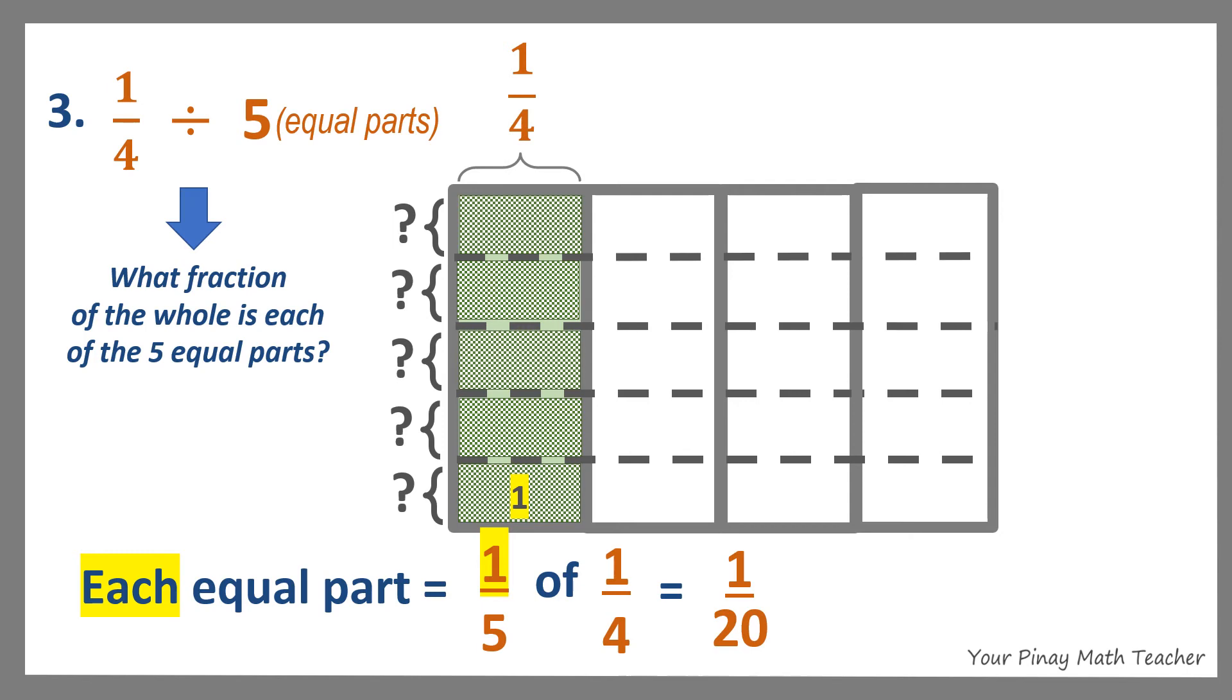Or, you multiply or you get the value of 1 fifth of 1 fourth by multiplying 1 by 1 to get 1 and 5 by 4 to get 20. So 1 fourth divided by 5 is 1 over 20.